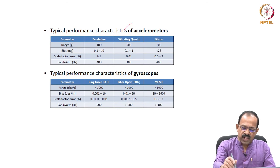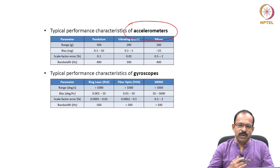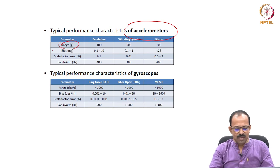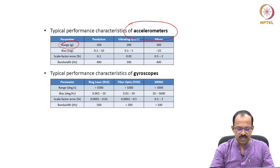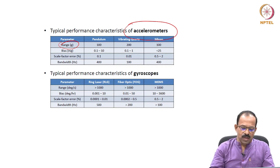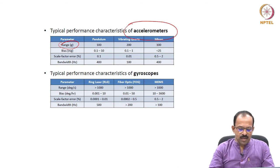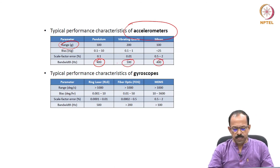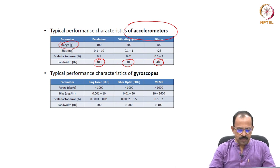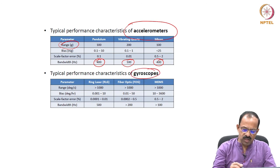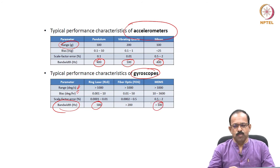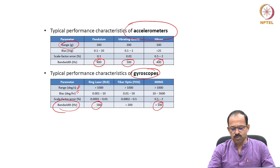These are the typical performance characteristics of IMUs. The values keep improving every year. For accelerometers, different types include vibrating chord, silicon, and pendulum types, with bandwidth around 400 Hz for most and 100 Hz for others — which is generally sufficient for most applications. For gyroscopes, the range, bias, scale factor, and bandwidth are also listed, with MEMS gyroscopes providing more than 100 Hz bandwidth, which is quite sufficient for most applications.